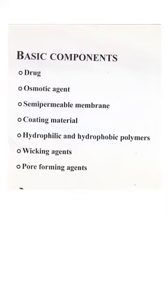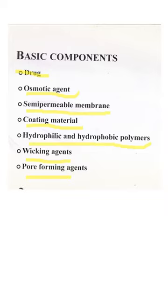Moving forth, let us understand the osmotic drug delivery system. The basic components are the drug and the osmotic agent, which is responsible for generating osmotic pressure. Both are enclosed in a system coated with a semi-permeable membrane, or a semi-permeable membrane on top of the coating material. Certain polymers are necessary to build up the size and shape of the delivery system, along with wicking agents and pore forming agents.